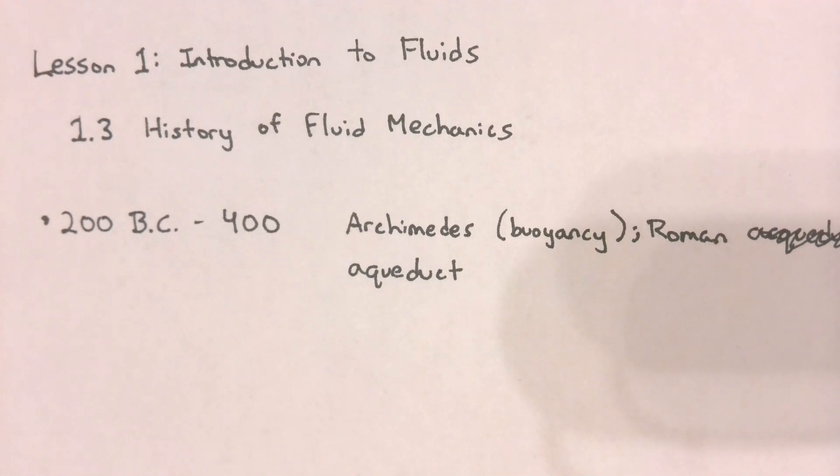However, it was around the year 200 BC where a man by the name of Archimedes discovered the concept of buoyancy. This was a big step in fluid mechanics and he ended up publishing his work on floating bodies, which seems to be the first published work in fluid mechanics that we have today.